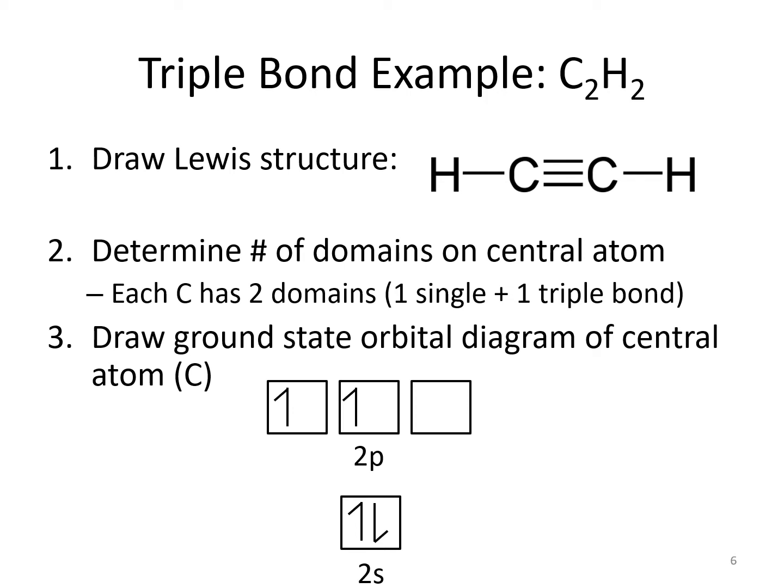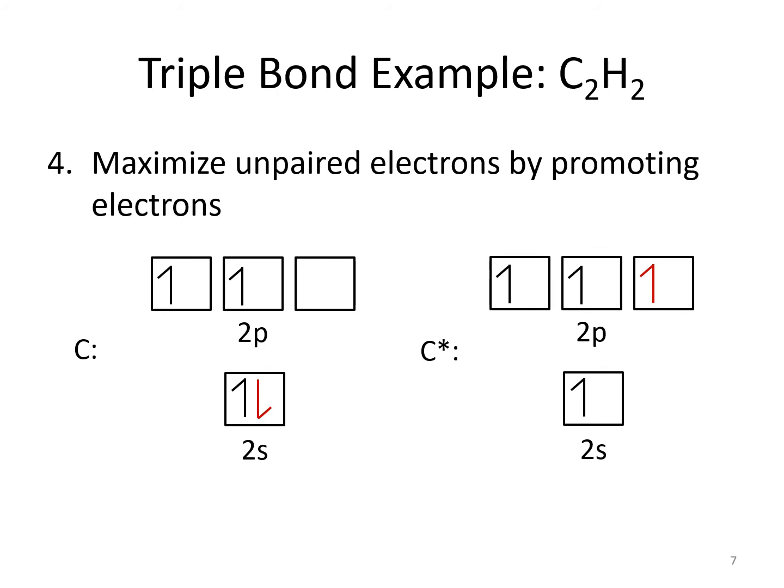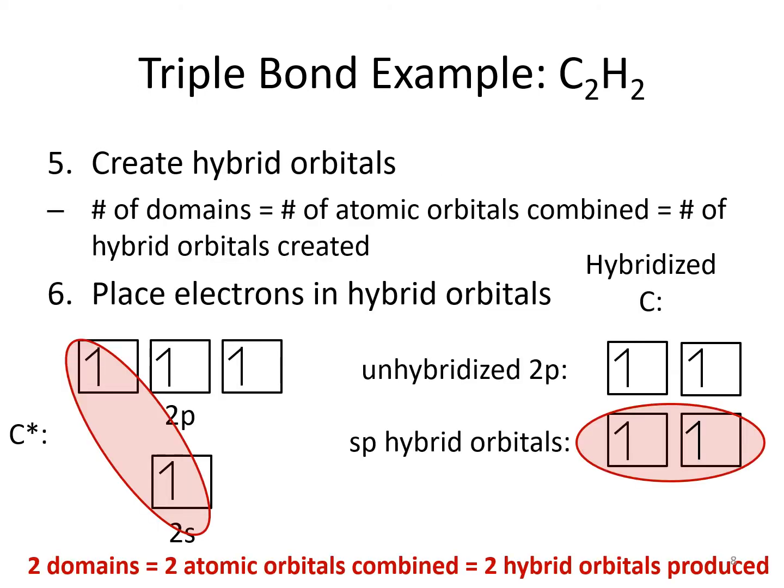Let's look at a molecule with a triple bond. We draw the Lewis structure and count the number of domains on the central atom. Again, we will focus on one carbon, but whatever we figure out for one carbon will also apply to the other since they are basically identical. Each carbon has a single bond and a triple bond, so that is two domains. We draw the ground state diagram of the central carbon atom and again maximize the unpaired electrons by promoting out of the 2s and into the 2p. Our magic number in this molecule is 2, since there are two domains on each carbon, so we combine two atomic orbitals to make two hybrid orbitals.